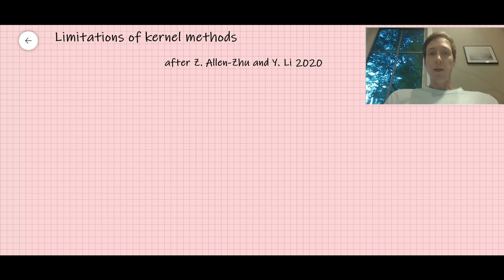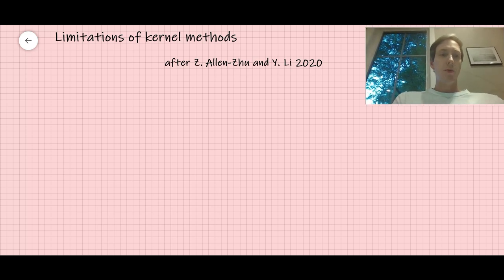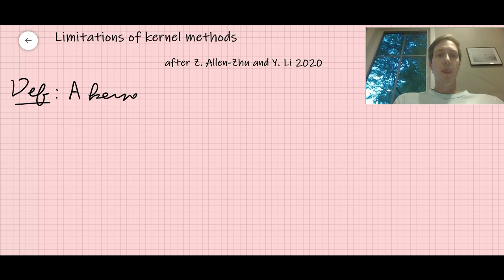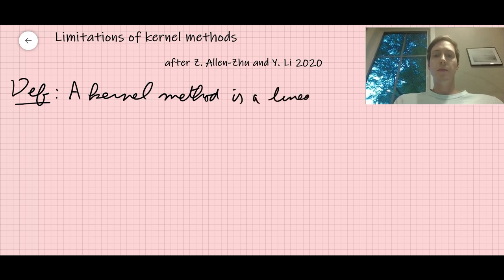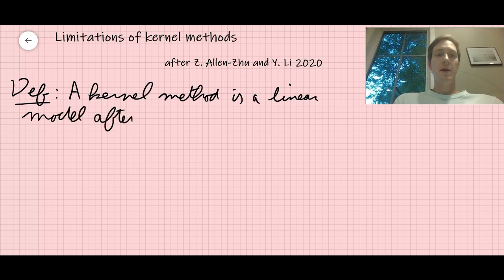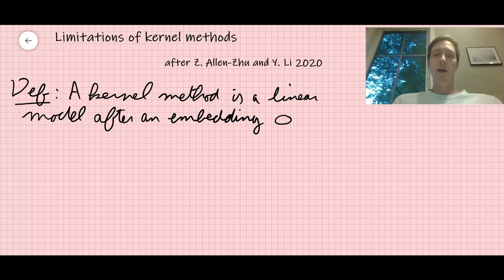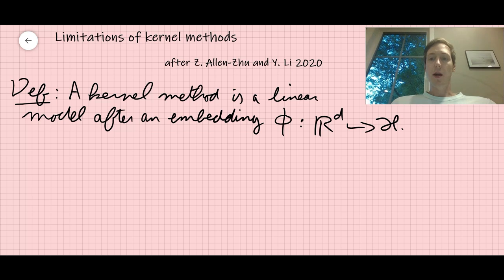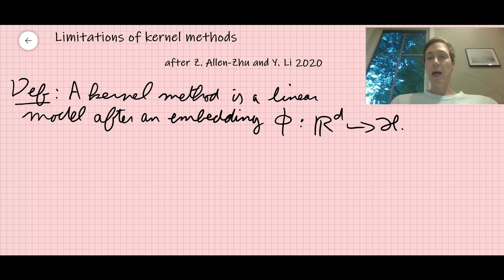We're going to start with a definition. A kernel method is simply a linear model after an embedding into a Hilbert space. So phi is going to go from R^d to H. We're in a machine learning setting where our training data is a bunch of points in R^d, and what the kernel method does is map those points in R^d to a certain abstract Hilbert space H.